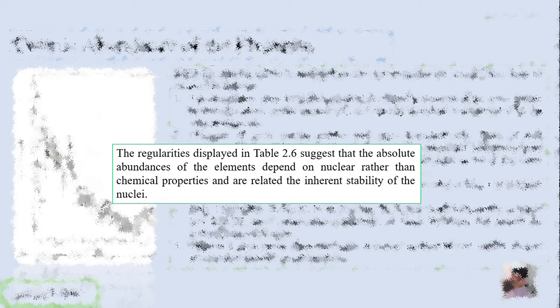The regularities displayed in the table suggest that the absolute abundance of the elements depends on nuclear rather than chemical properties, and are related to the inherent stability of the nuclei. So the cosmic abundance of the element is a nuclear property, not a chemical reaction.